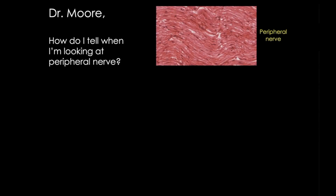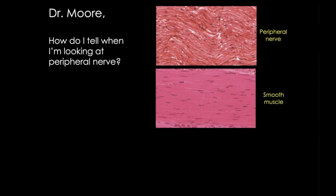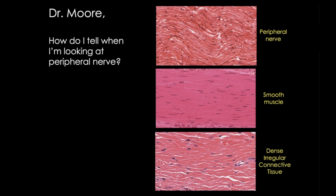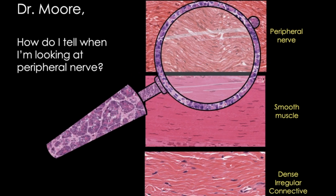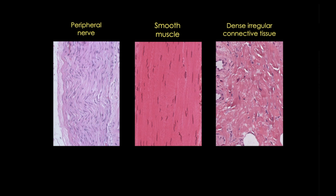Students often mix up peripheral nerve with smooth muscle and dense irregular connective tissue. Let's investigate. In routine H&E slides, peripheral nerves do resemble these other fibrous tissues, particularly in longitudinal sections. All three tissues are eosinophilic and they all contain scattered elongated nuclei. So without other clues such as location in the body or recognizable features such as endothelial cells in a blood vessel, identification isn't always easy. But there are several things that may help you tell these tissues apart.